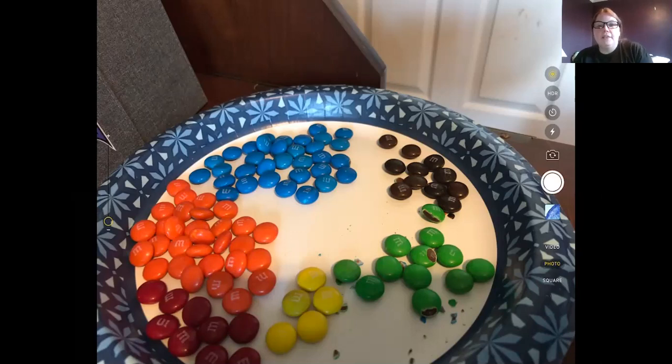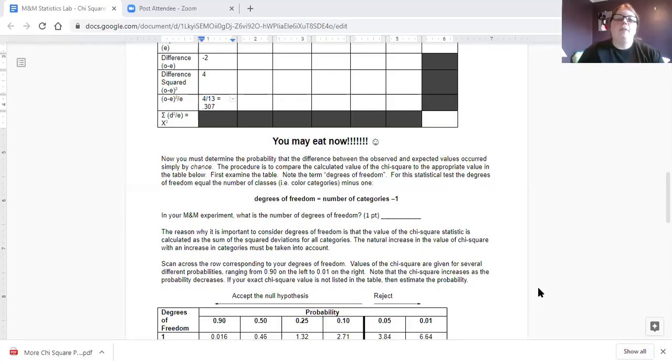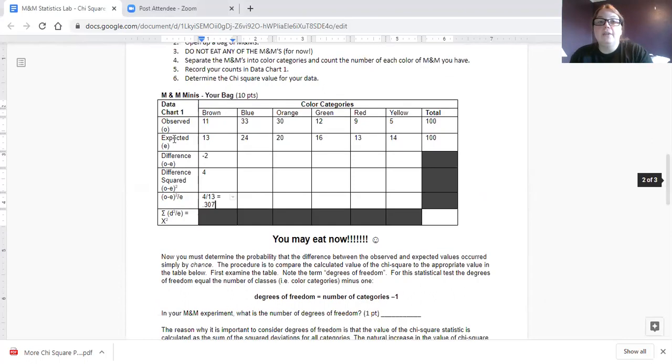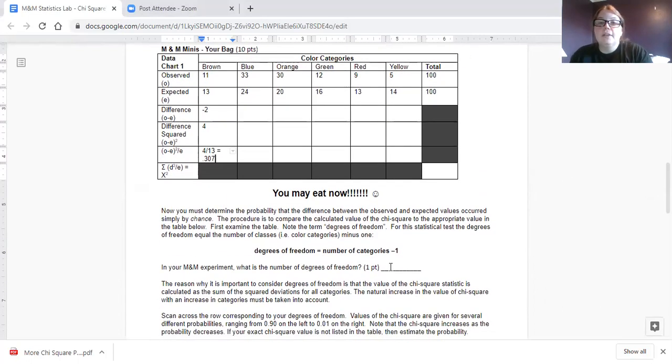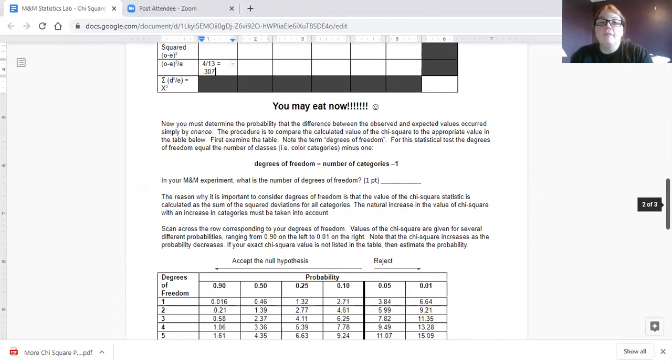So now you must determine the probability that the difference between the observed and expected values occurred simply by chance. The procedure is to compare the calculated value of chi-square to the appropriate value in the table below. First example, the table. Hold on, guys. Technical difficulties. Let's share with this. There you go. We're back. Okay, so we need to figure out our degrees of freedom, how you're going to use this critical value chart down here. So degree of freedom, it says, is the number of categories minus one. So how many categories did we have? We had one, two, three, four, five, six. So how many is that? Six minus one. That answer goes here. That's our degrees of freedom.